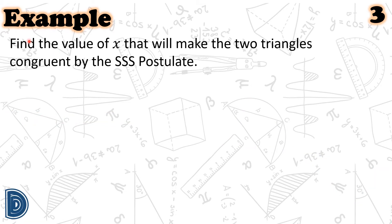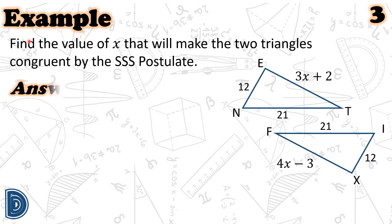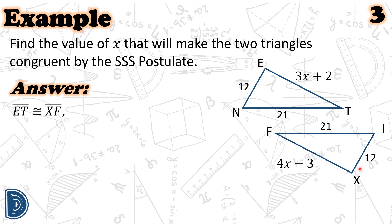Example number three. Find the value of X that will make the two triangles congruent by the SSS postulate. Observe that in the figure, we have triangle NET and triangle IXF with corresponding sides congruent. NE is congruent to IX with measurement equal to 12 units. Also, NT and side FI of the other triangle have the same measurement, therefore these are congruent. Then, we need to show that segment ET of triangle NET and side XF of triangle FIX are congruent so that the two triangles are congruent by the SSS postulate.